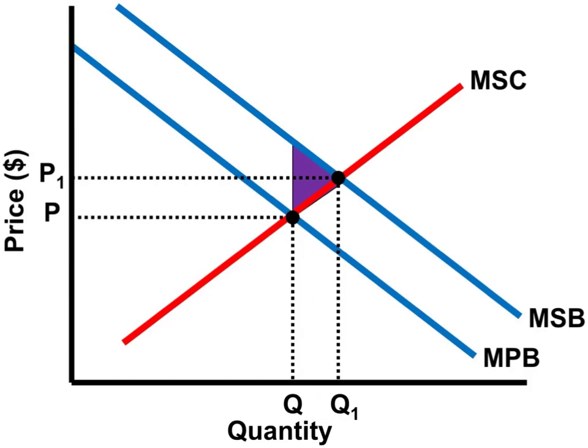P1, Q1 represents the socially optimal point. However, this private market generates a price of P and a quantity of Q. Society is getting too little of the good at too low of a price.